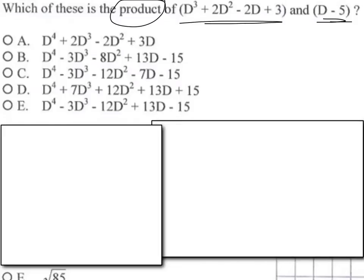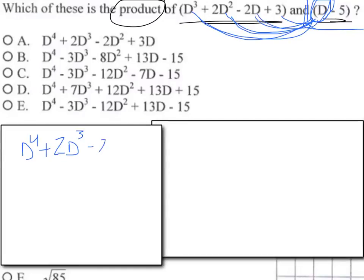We'll start with the smaller of the two. I'm going to take that first D and distribute it. So I'm just going to multiply those together. First one: D times D³ is D⁴. D times 2D² is positive 2D³. This one would be negative 2D², and this will be 3D.